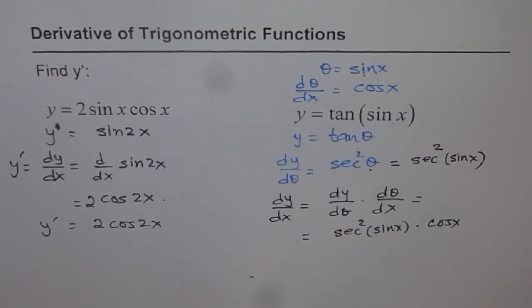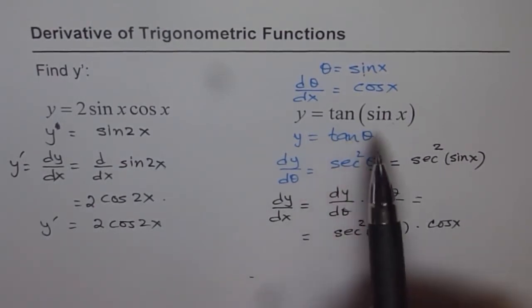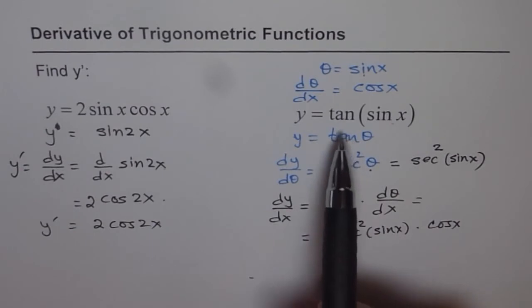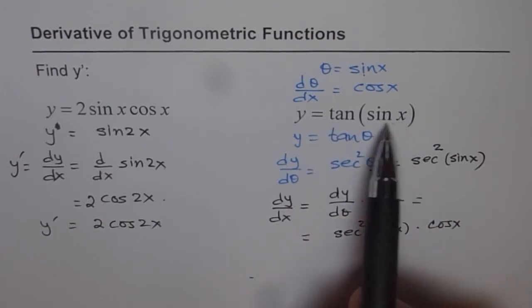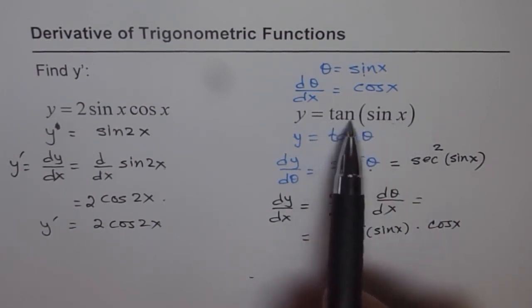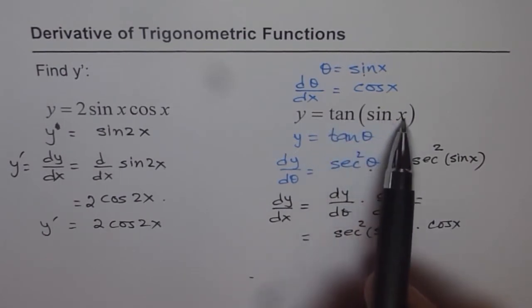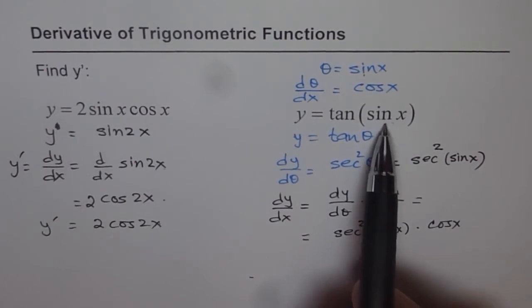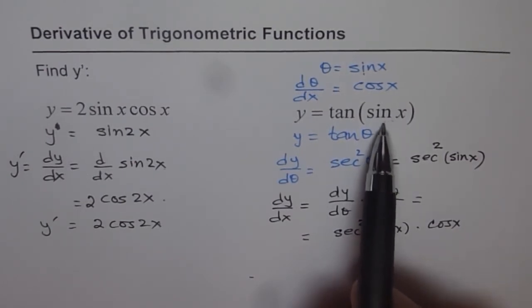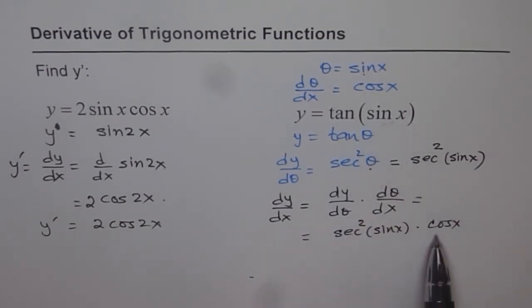So we could have done it directly also. So in that case, we will do outside function first. So derivative of tan of theta will be secant square theta, that is secant square sin x. And then times it with derivative of inside function. Inside function is sin x. So you multiply by cos x. That is how you get. But these are the correct steps to do it.